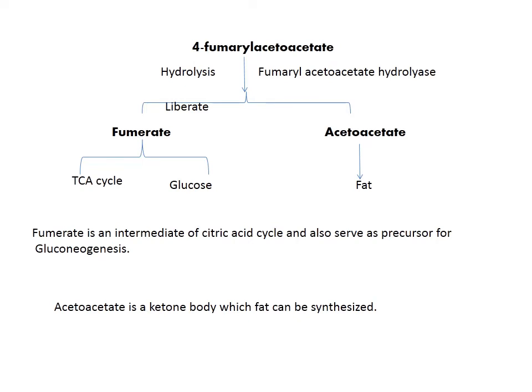4-fumarylacetoacetate undergoes hydrolysis to liberate fumarate and acetoacetate. Fumarate will enter the TCA cycle and is involved in glycolysis — it is a glucogenic precursor for synthesis of glucose. Acetoacetate is used for fat synthesis, making it ketogenic. Fumarate is an intermediate of the citric acid cycle and serves as a precursor for gluconeogenesis. Acetoacetate is a ketone body from which fats can be synthesized.